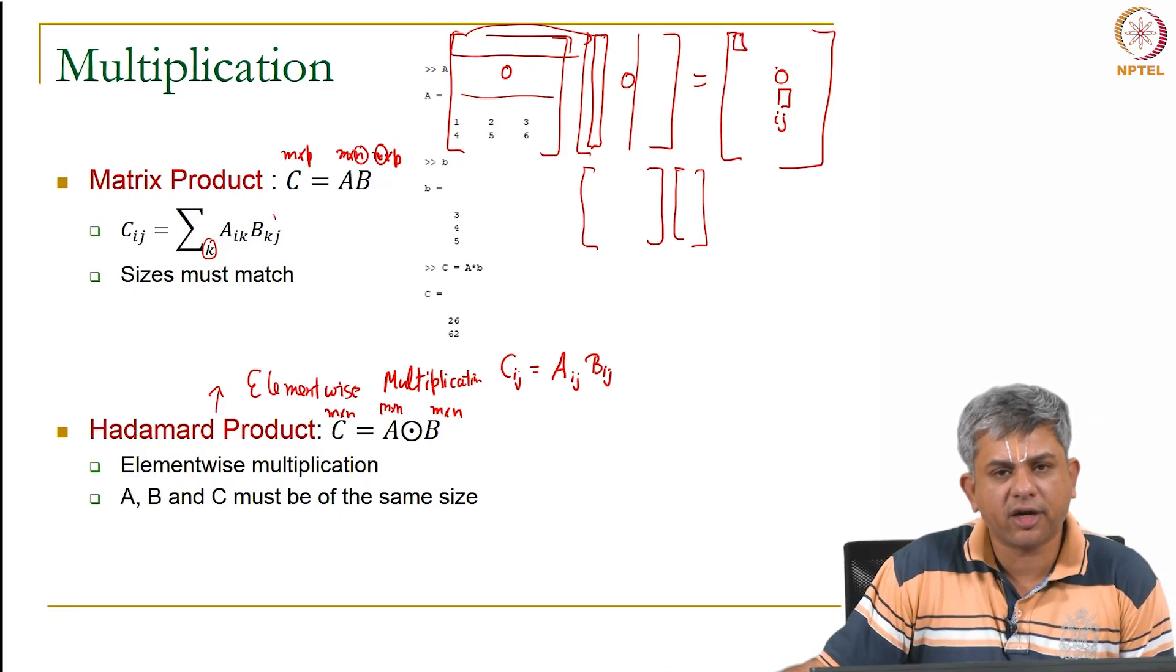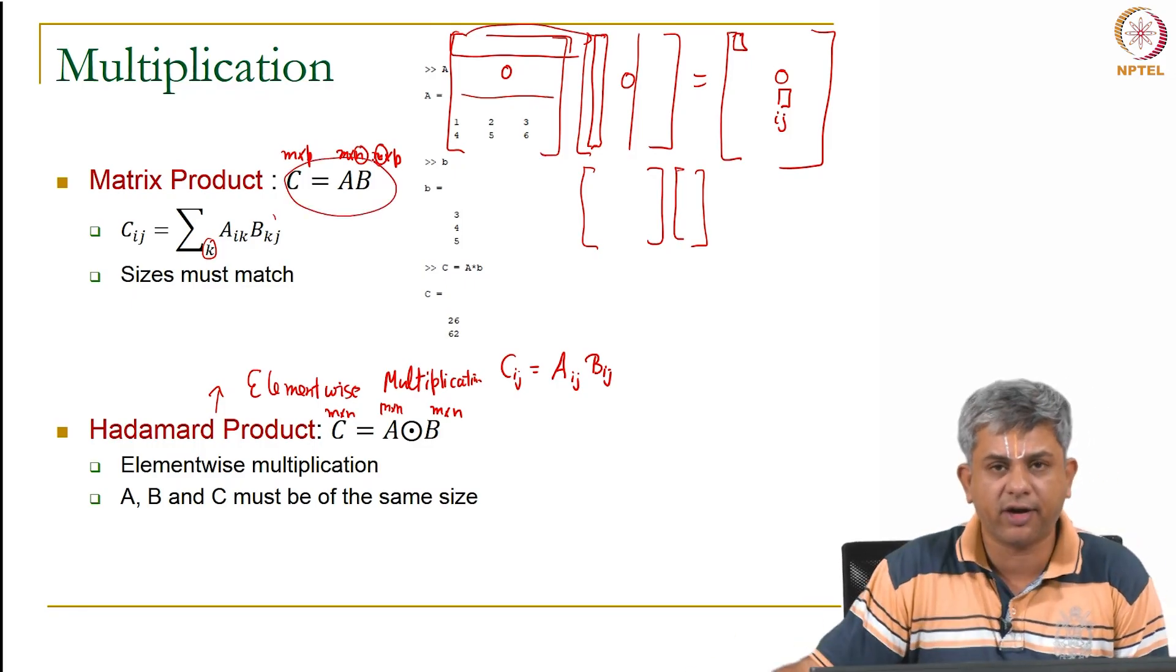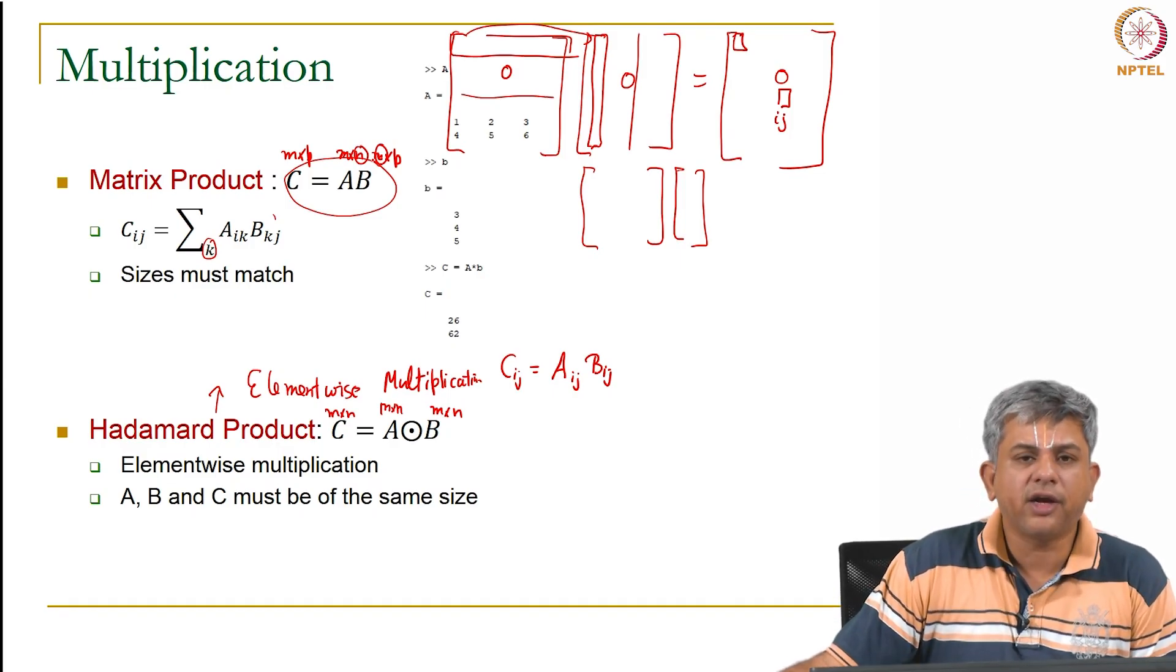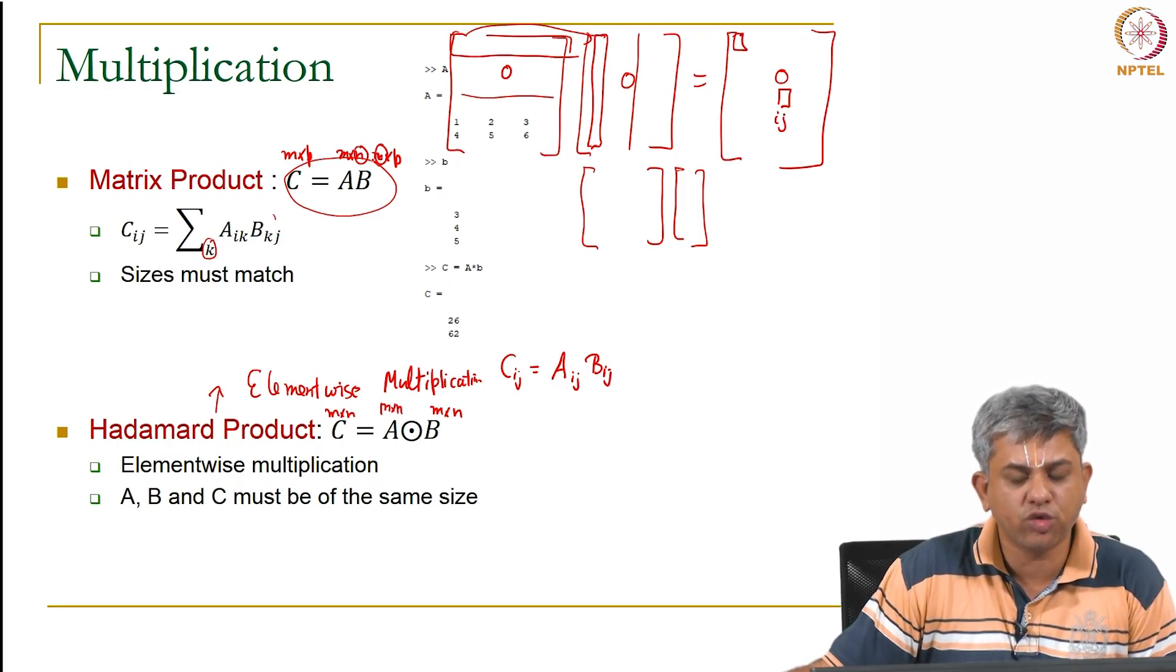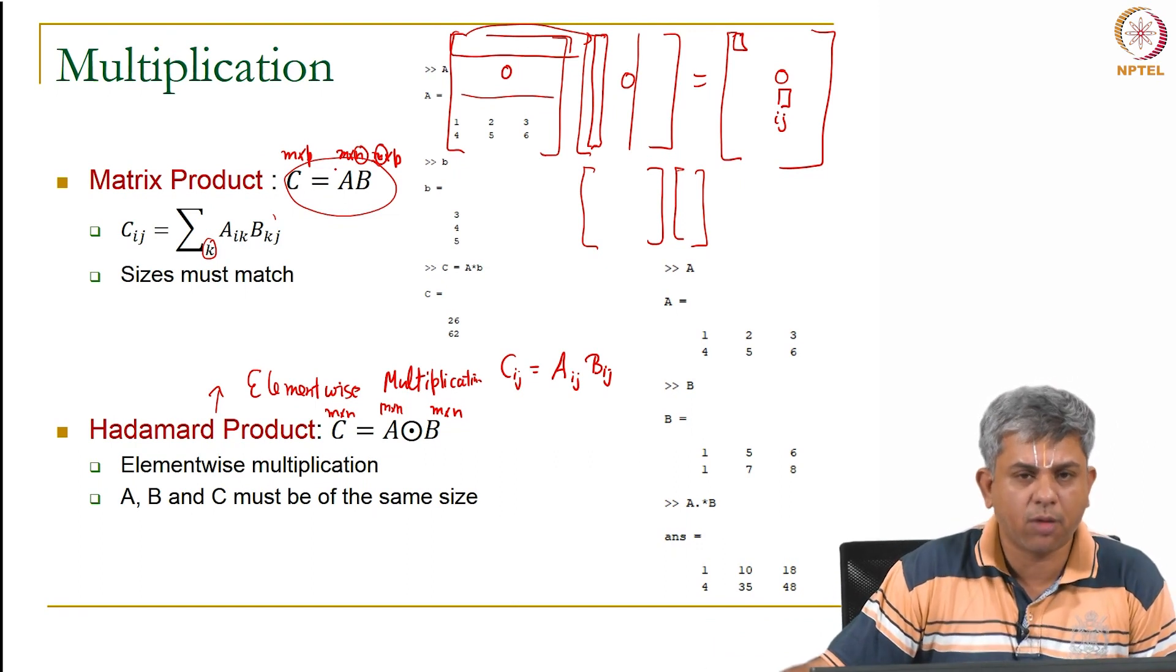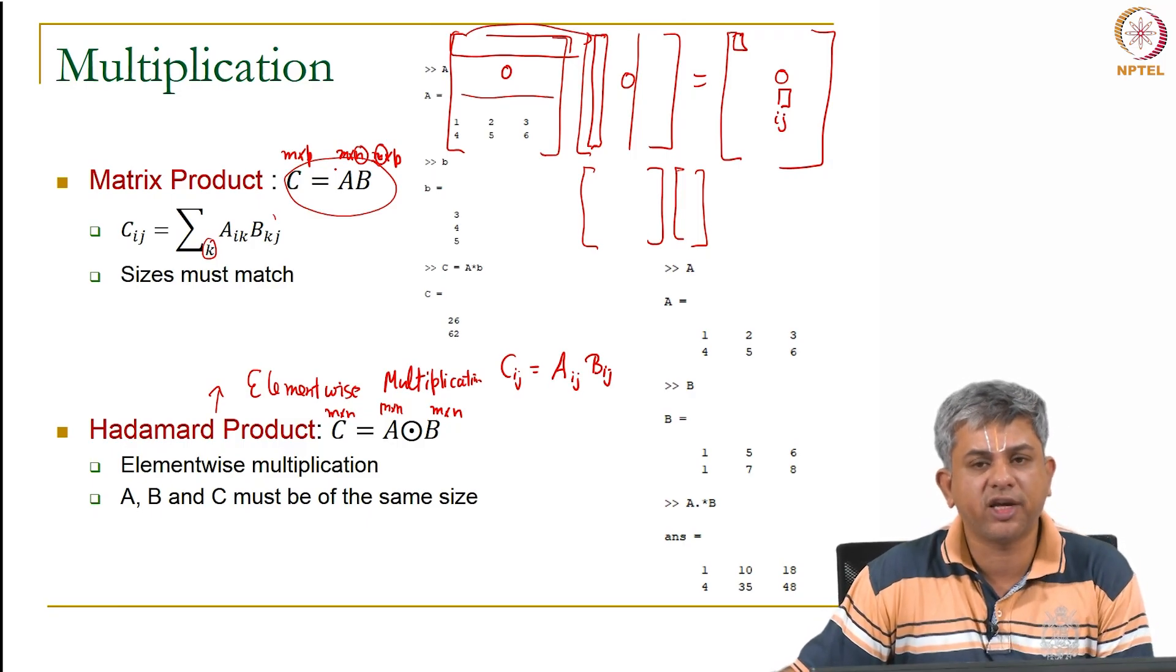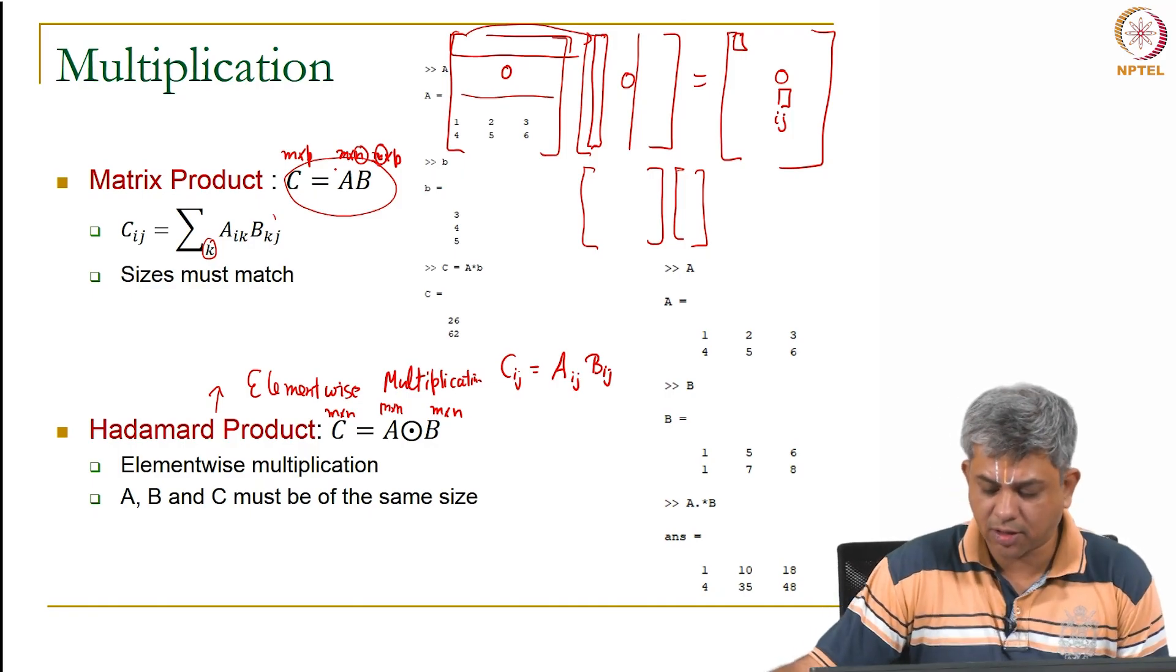Why is it that the normal matrix product is defined in this weird way? It turns out that it has several advantages linear algebra wise. We do not have the time to go through that in this course. But it turns out that more often than not when products occur they usually occur as matrix products rather than as Hadamard products.